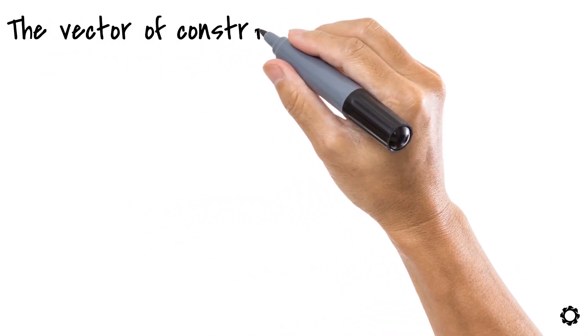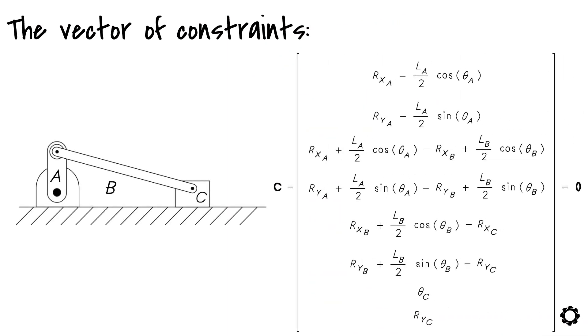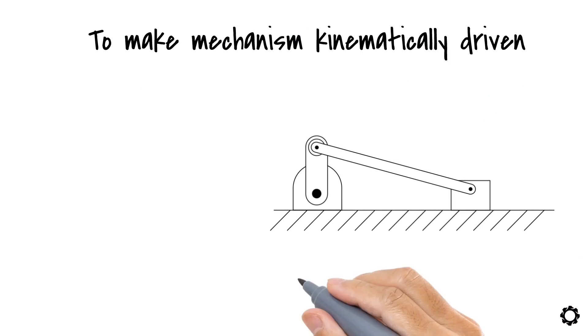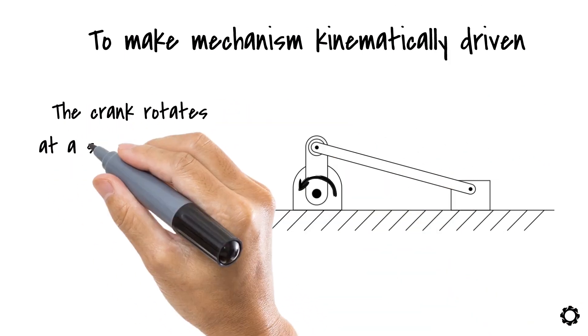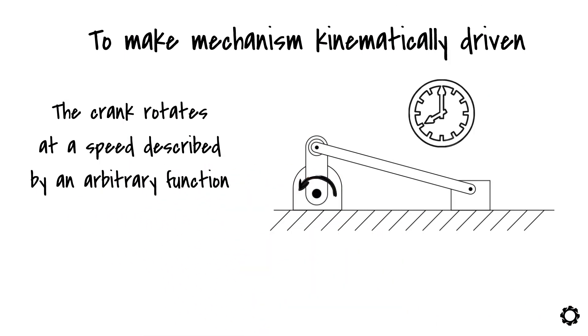The vector of constraints for this mechanism is as follows. Now, to make the mechanism kinematically driven, let's impose an angular velocity on the crank. Let's say the crank rotates at a speed described by an arbitrary function that depends on time. I could write it as θA dot equals f of t.